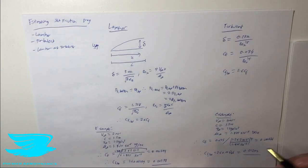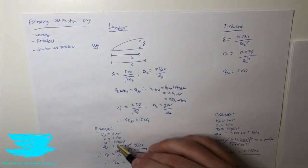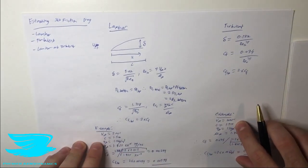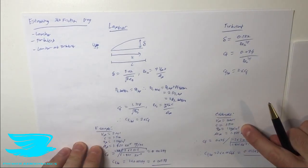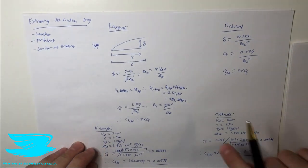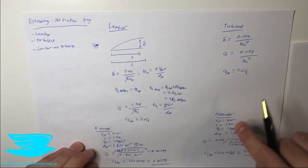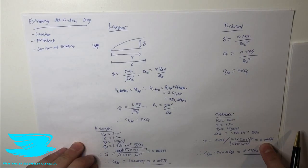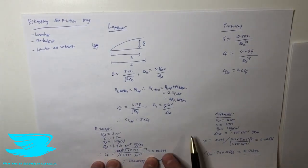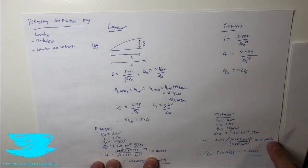Let's go through an example using the exact same conditions: free stream velocity of 2 m/s, chord of 1.5 m, density 1.2 kg/m³, and viscosity 1.825 × 10⁻⁵ Pa·s. Substituting these values into the turbulent equation gives a significantly different result: CF = 0.00646, compared to 0.00299 for the laminar case — roughly twice as much.